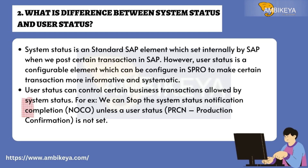Question number two: What is the difference between system status and user status? System status is a standard SAP element which is set internally by SAP when we post certain transactions. User status is a configurable element which can be configured in SPRO to make transactions more informative and systematic. For example, user status can stop the system status notification completion (NOCO) unless the user status PRCN (Production Confirmation) is set.